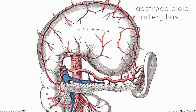As you can see here, it's got these little branches — these gastric branches which are given off to both surfaces of the stomach. It's also got omental branches which descend to supply the greater omentum.